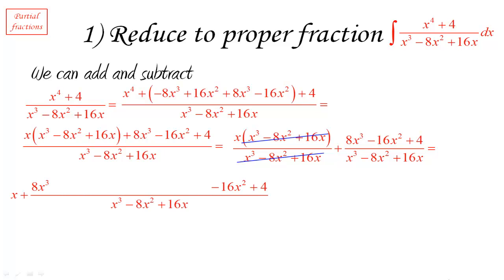x and another fraction which as you can see is still not in proper form. But at least we have lowered the degree of the top. It went down from 4 to 3. Now we can repeat the same procedure. We notice that 8x cubed and x cubed are only different by a factor of 8 or if we had the other two terms multiplied by 8. Well, we can add and subtract them.